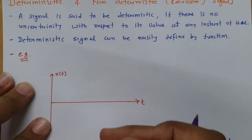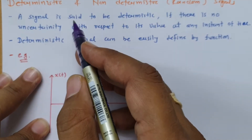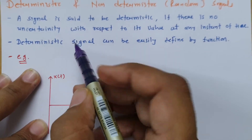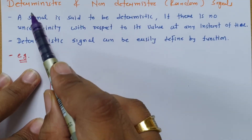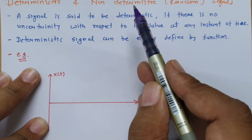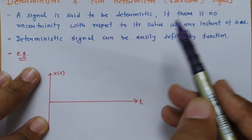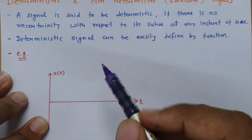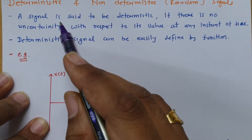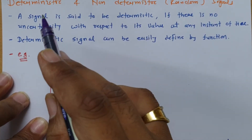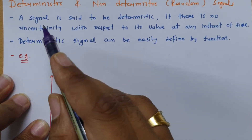Welcome to the Signal and System lecture series. In this session I will be discussing deterministic and non-deterministic random signals. Let us begin with the first agenda: what is a deterministic signal.